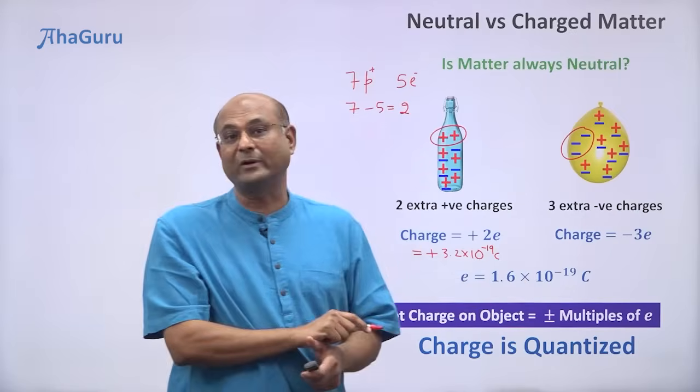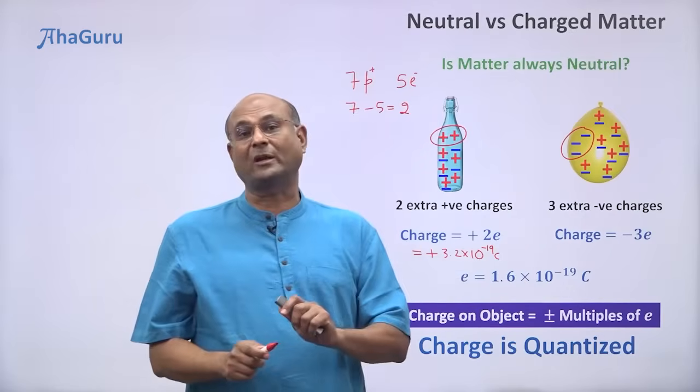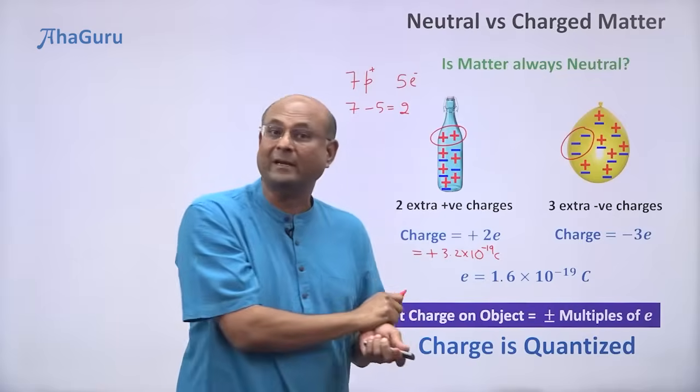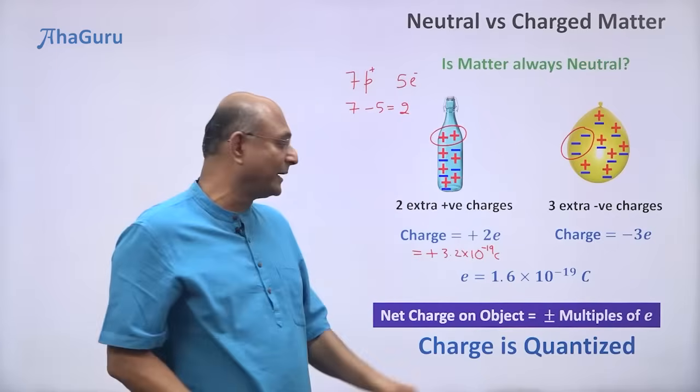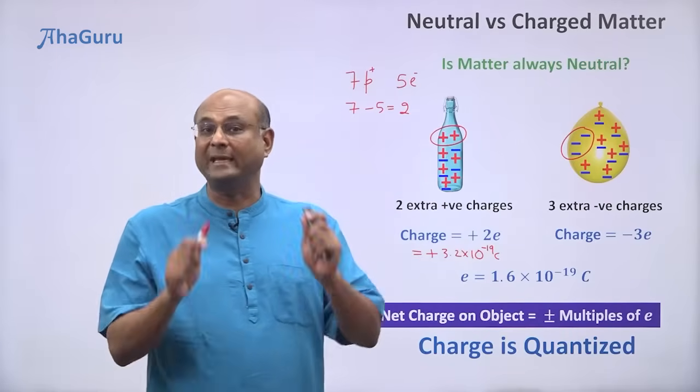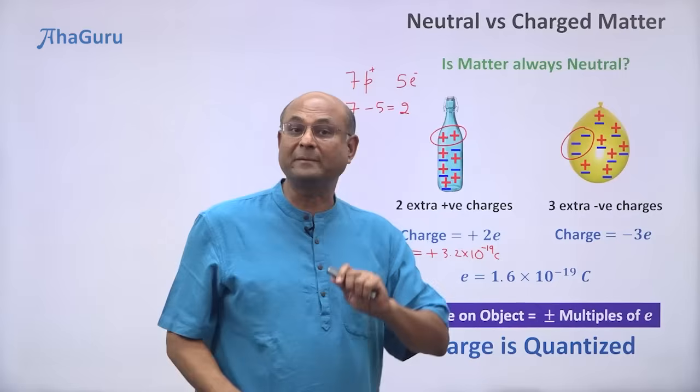So always charge on a matter, on some kind of an object, will always be some multiple of the fundamental unit. So N times E, plus or minus N times E.